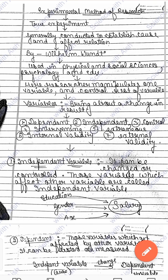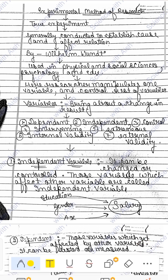Hello everyone, hope you all are doing well. I am here with a quick revision of a very important topic: the experimental method of research. I will explain briefly what the experimental method of research is. Experiments are mostly done in the laboratory, which is called laboratory research. The researcher does experiments and checks whether findings are valid — for example, drugs or medicines.